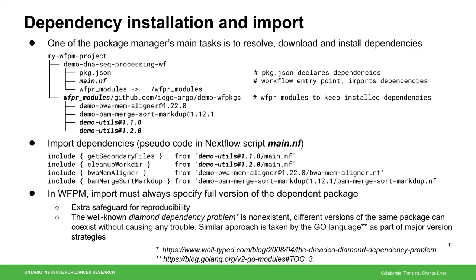Here we take a closer look at how dependencies are installed and imported. A package's dependency is declared in the pkg.json file, and the main entry point script is where dependencies are imported. The WFPM CLI tool detects the dependency and resolves the dependency of dependencies recursively, then downloads and installs all dependencies — direct and indirect — under the directory called WFPM modules. When a dependency is imported, WFPM requires specifying the full version of the package, which provides an extra safeguard for reproducibility. The well-known diamond dependency problem is non-existent in WFPM, as different versions of the same package can coexist without trouble. A similar approach was also taken by the Go language.